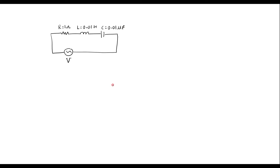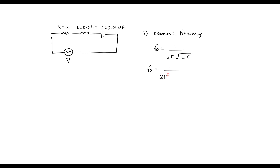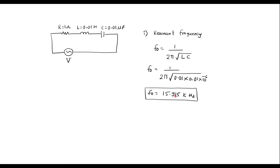Let me calculate the resonant frequency. The resonant frequency is calculated using the formula F0 equal to 1 over 2 pi times the square root of LC. Substituting the values: F0 equals 1 over 2 pi times square root of 0.01 into 0.01 times 10 to the power minus 6. Solving this, we get F0 equal to 15.915 kilohertz.